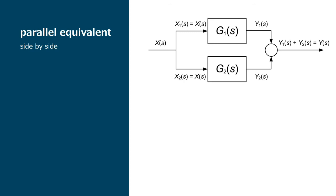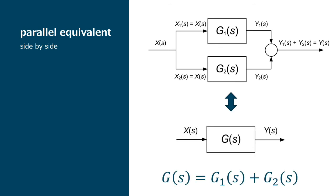Now we can find the equivalent of the parallel of two blocks. In a parallel, we have two blocks being excited by the same input and the output resulting from the sum of the outputs at each block. The equivalent block, Gs, is obtained from the sum of the two transfer functions.